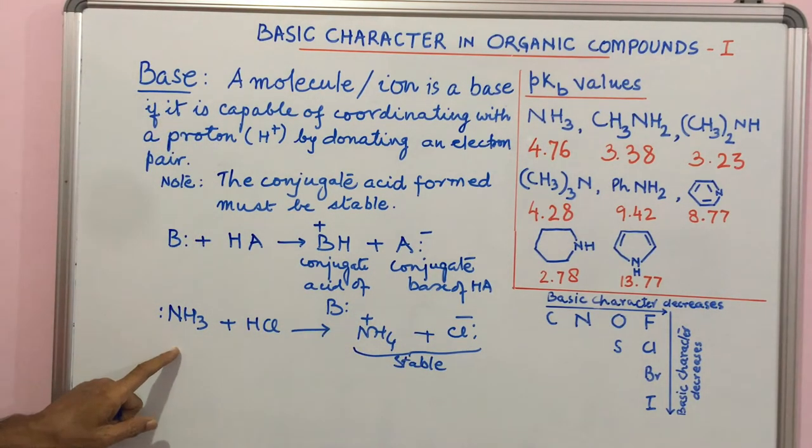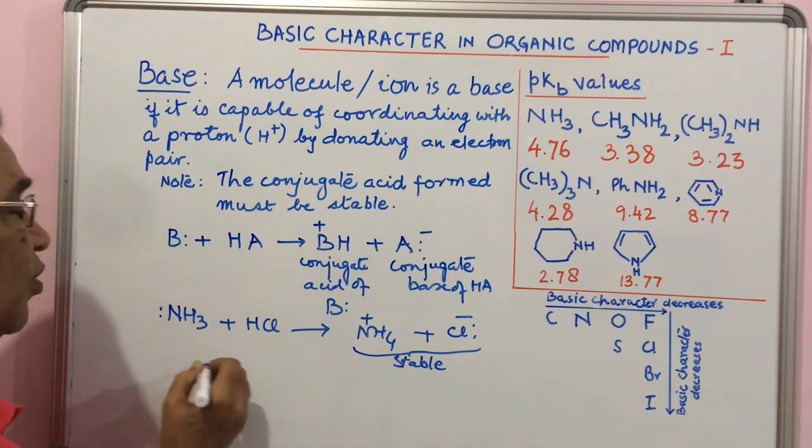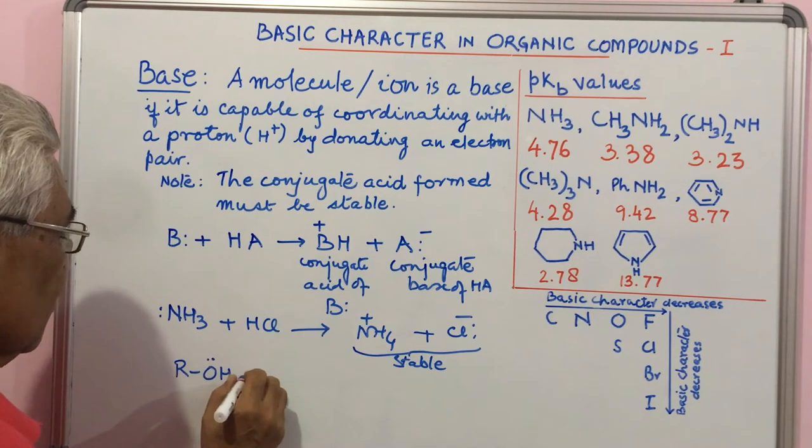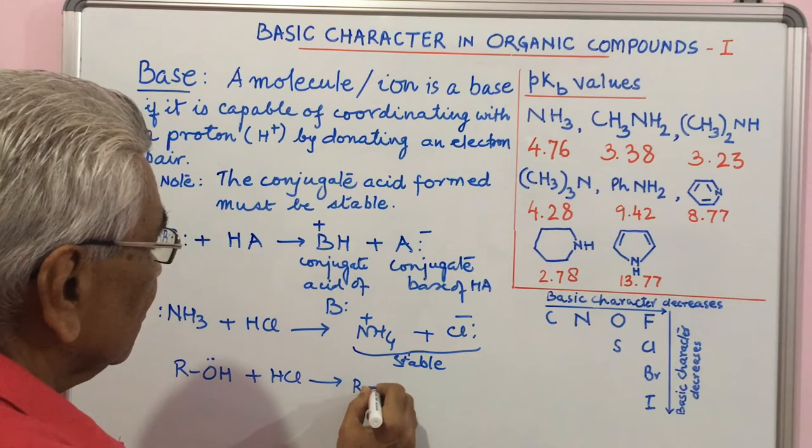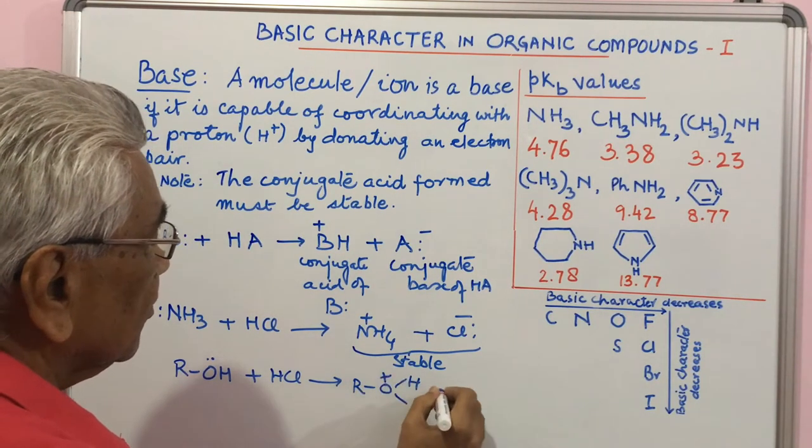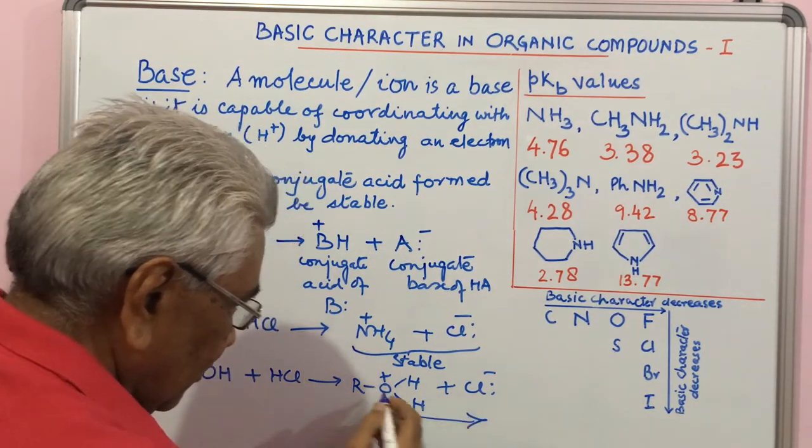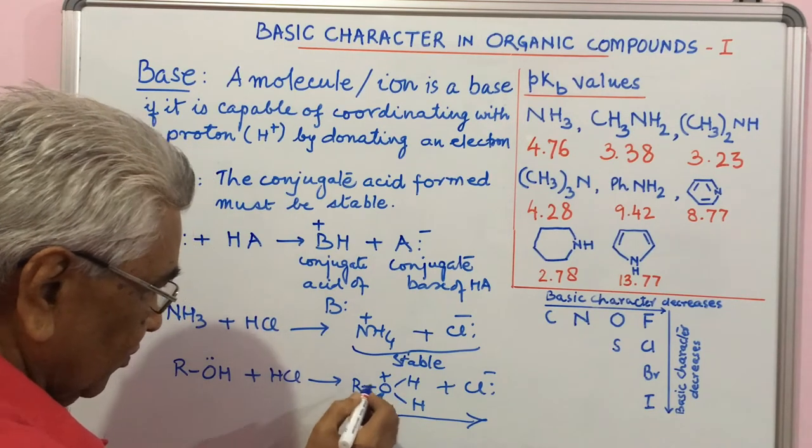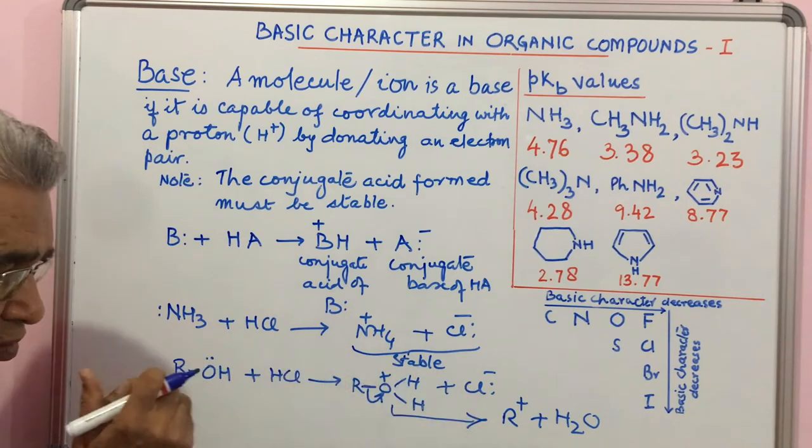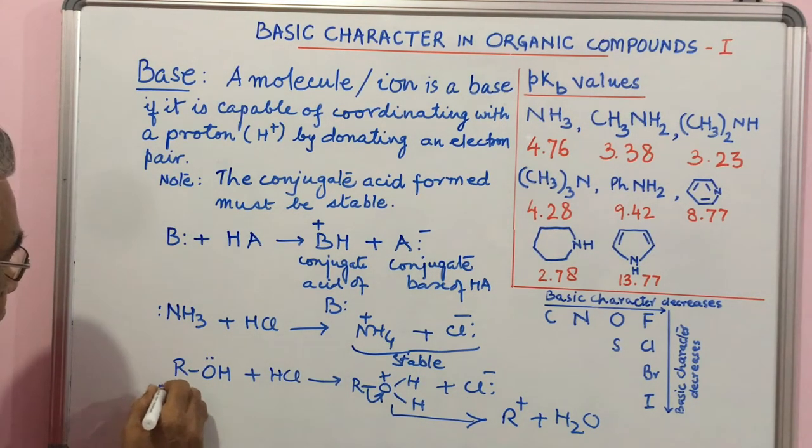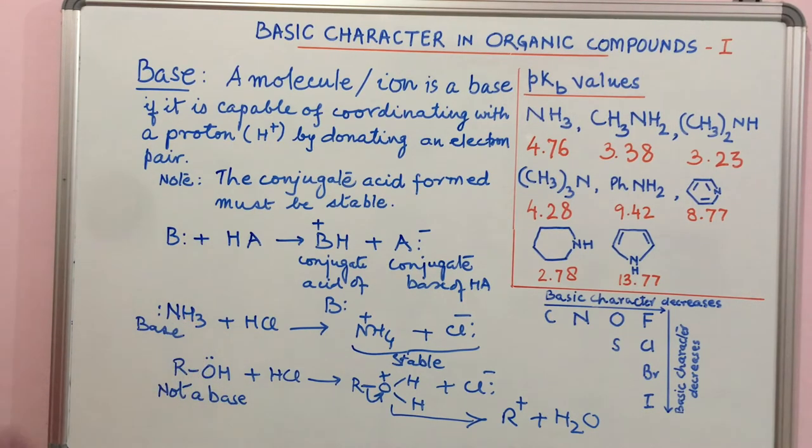I will take a case where we coordinate proton with electron pair, but still that is not possible because that is not stable. ROH - this has electron pair, reacts with HCl. If it reacts with HCl, it could form ROH2+ Cl-. This is an unstable pair because water is lost and you get here carbonium ion plus H2O. This pair is unstable. Hence, this is not a base although it has an electron pair.